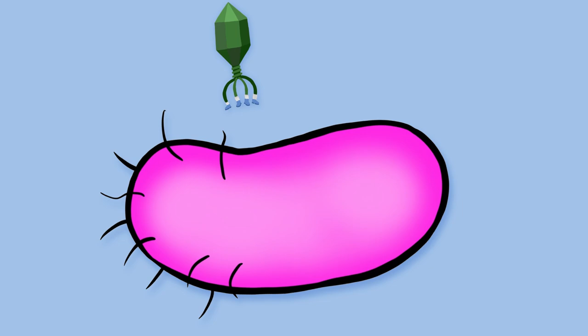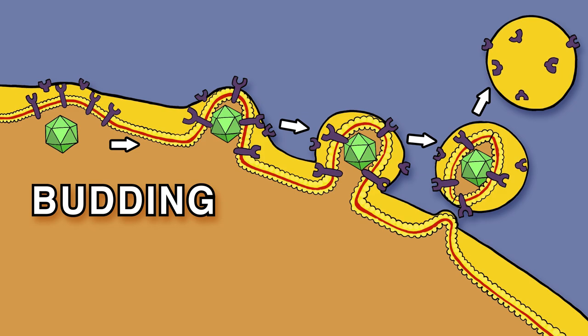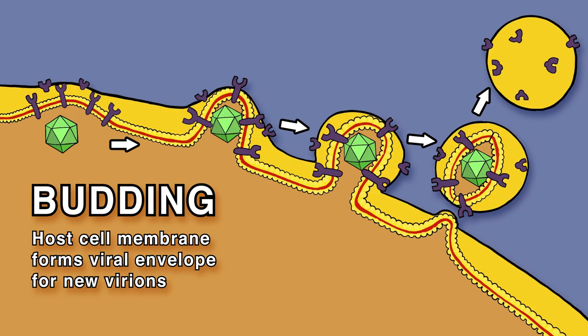Non-enveloped viruses mostly escape their host through lysis, or host cell membrane rupture — yeah, it's not the nicest. Enveloped viruses exit by using host membrane supplies, using up the cell membrane up until the host cell dies.